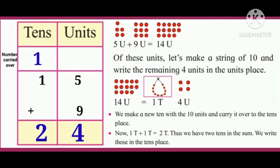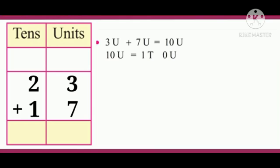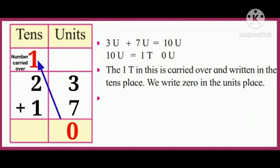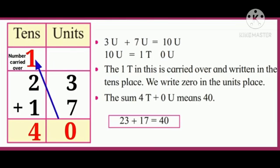Next example: 23 plus 17 is equal to how much? Let us first add the units place. 3 units plus 7 units is equal to 10 units. 10 units is equal to 1 ten and 0 units. So the 1 ten in this is carried over and written in the tens place.